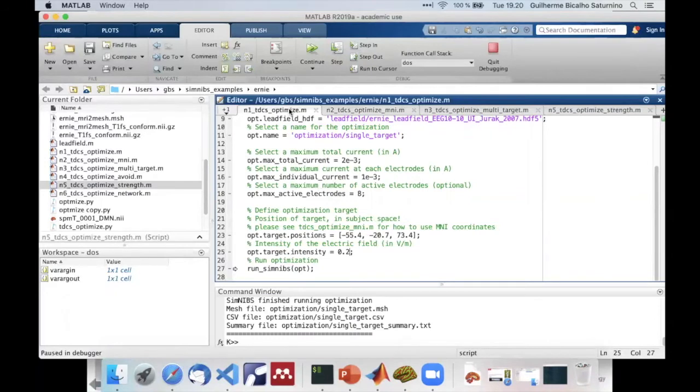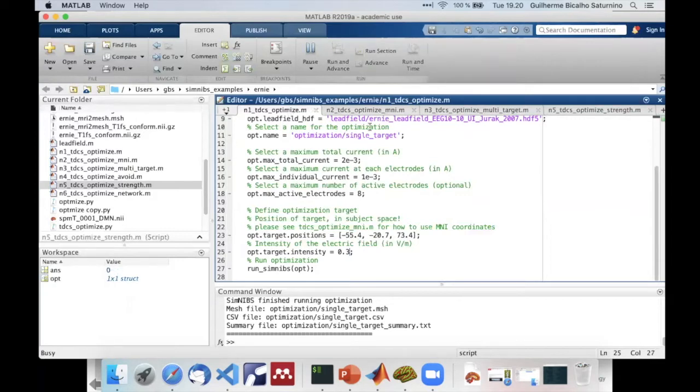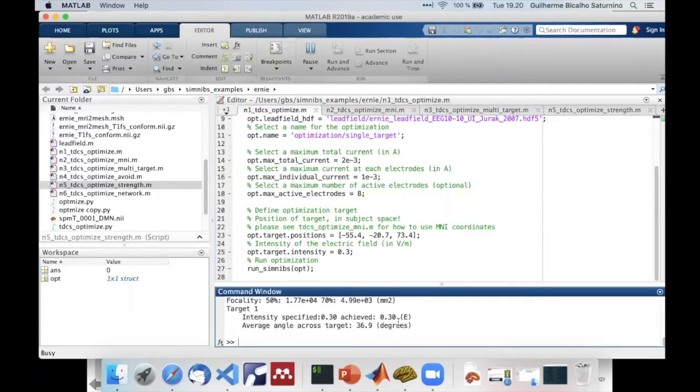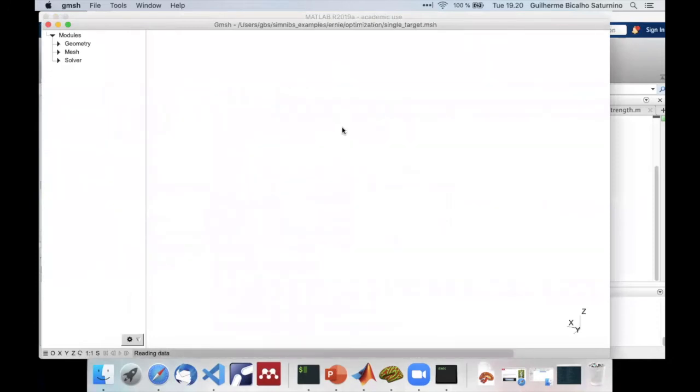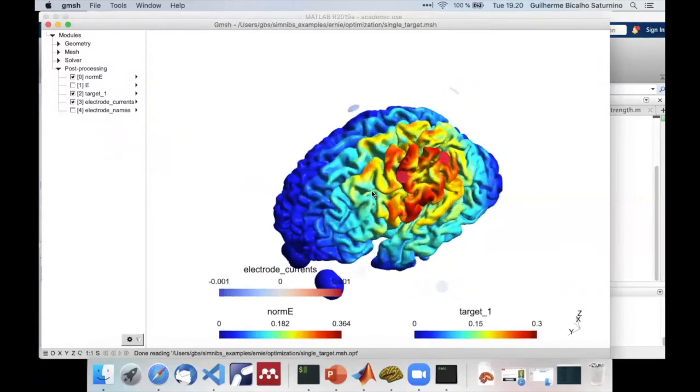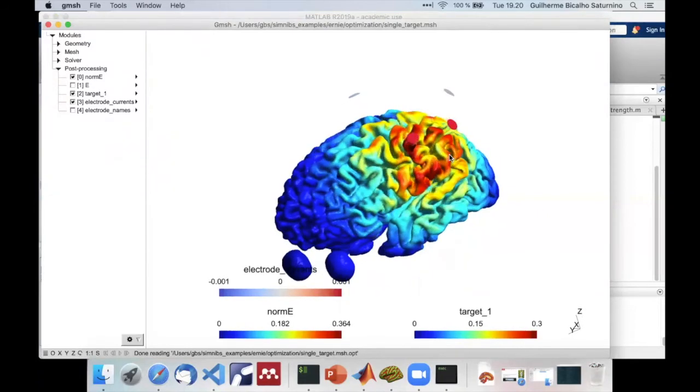Now suppose I want to hit this target a little bit harder at 0.3 volts per meter. I can just change the slider, save it, and run again. Now you can see the electric field is a little bit more spread out than before. This is the intensity-focality trade-off and I will talk more about it soon.